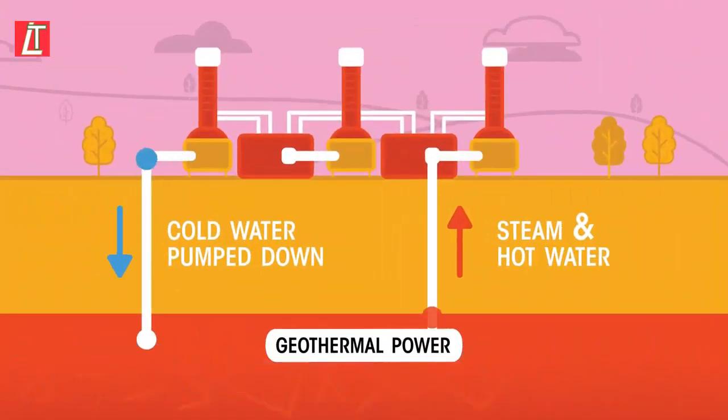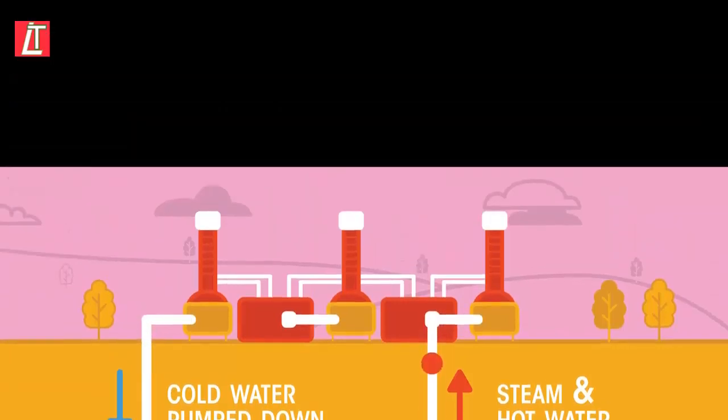Deep underground, the earth's rocks are naturally very hot. We can use this thermal energy to generate steam in a power station, thus using an electric current to transfer energy to use in our homes. We call this geothermal energy.